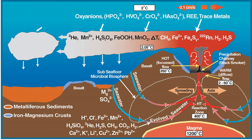Ocean chemistry, also known as marine chemistry, is influenced by turbidity currents, sediments, pH levels, atmospheric constituents, metamorphic activity, and ecology. The field of chemical oceanography studies the chemistry of marine environments including the influences of different variables.